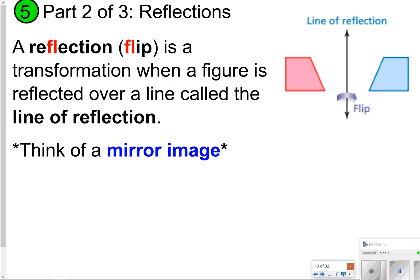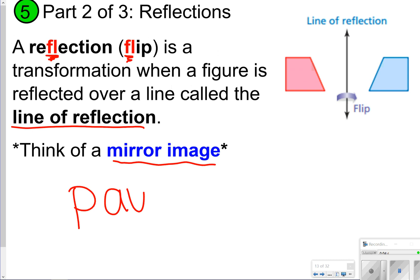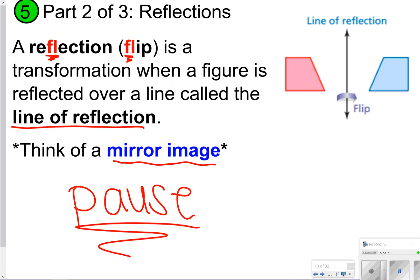The next thing we're going to talk about is a reflection — it's a flip, when a figure is reflected over a line called the line of reflection. Think about a mirror image. Another way to remember: reflection and flip both have the letters 'FL' in them. Go ahead and pause the video to write down what a reflection is, and then we're going to try a few together.